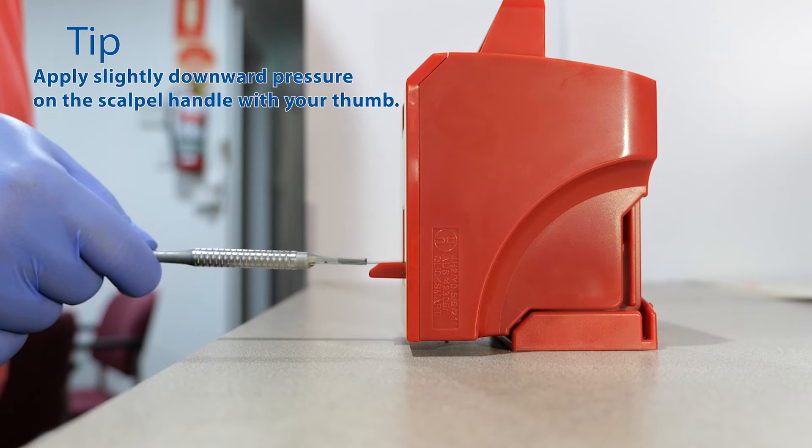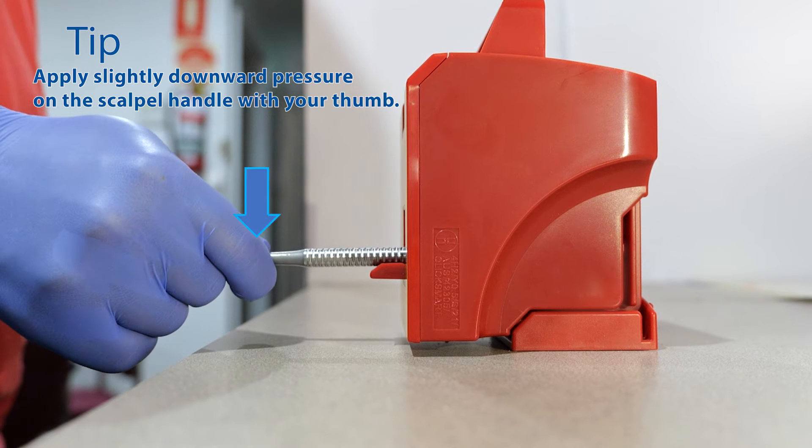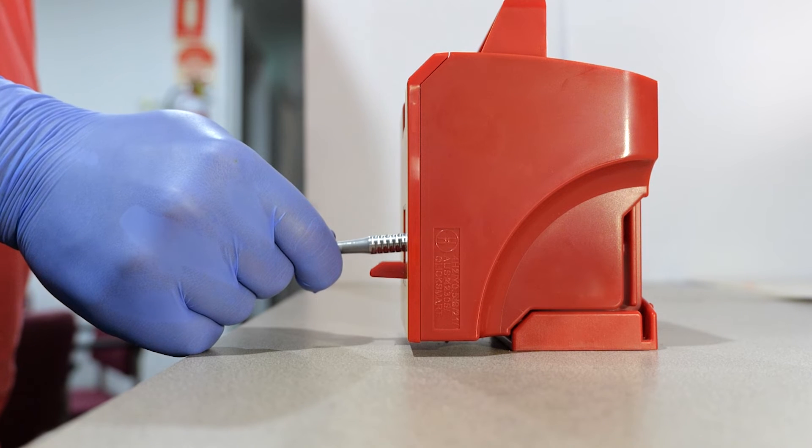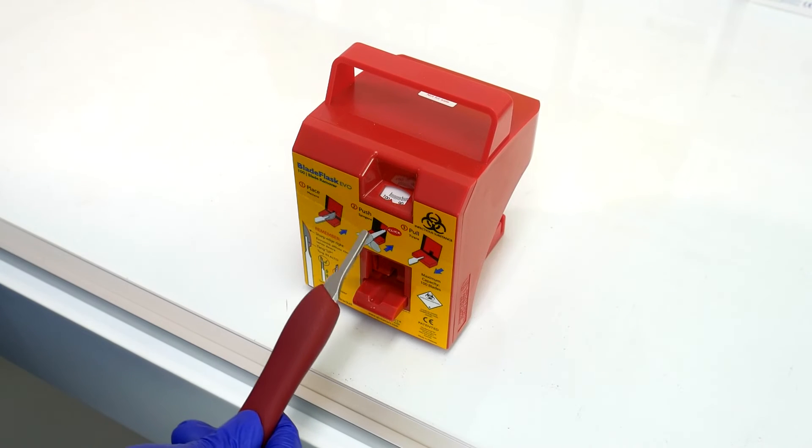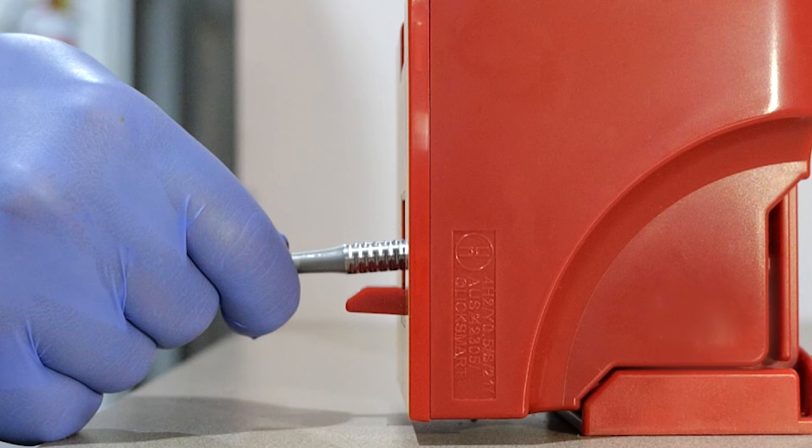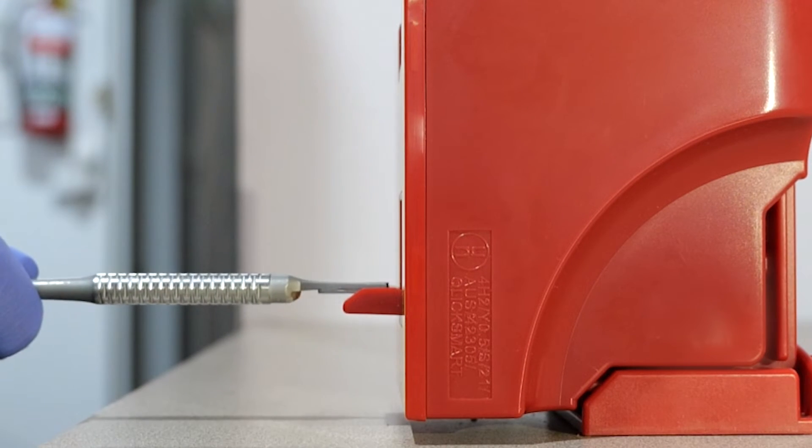To assist this motion, apply a slightly downward pressure on the scalpel handle with your thumb. No need to force the scalpel handle into the device. Finally, when pulling the handle out along the internal ramp, again, apply a slight downward pressure with the thumb holding the scalpel handle.